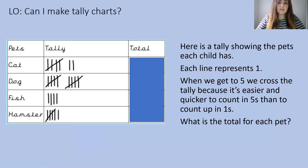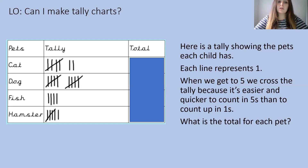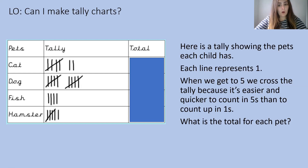Here is an example of a tally chart that shows what pets each child has. Each line represents one. As you can see, when we get to five we cross the tally, and this is because it's easier and quicker to count up in fives than it is to count up in ones.